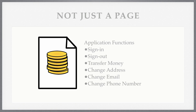This investment account or bank provides the user with several important functions they can perform on the website — things such as signing in, signing out, transferring money between accounts, changing their home mailing address, changing their email address, changing their phone number. These are things you'd want to do with your bank: if you move you want to change your address, if you change your email or get a new phone, you really don't want to have to go into the branch. So the site provides these.